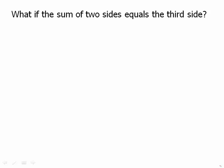What if the sum of the two sides equals the third side? Remember, the equals is not allowed by the triangle inequality either. It's a strict greater than. So what's the problem with equals?